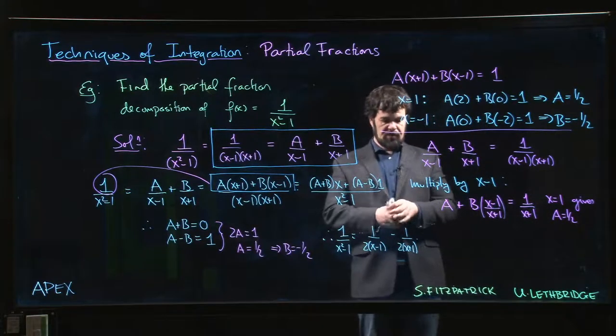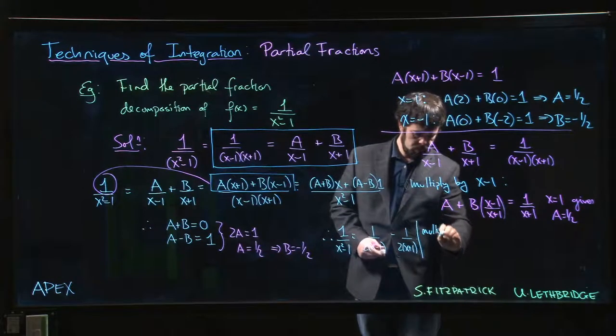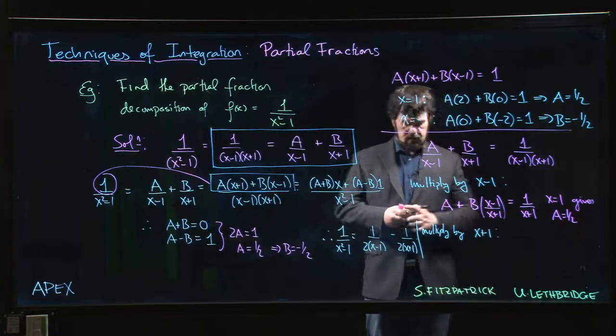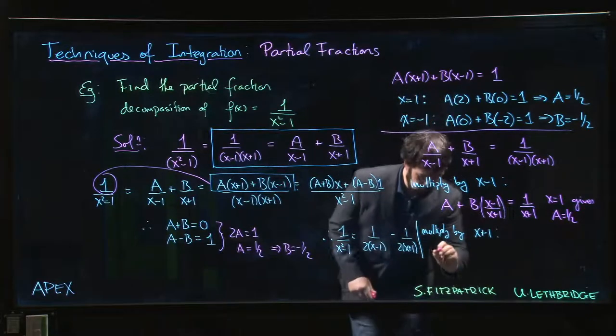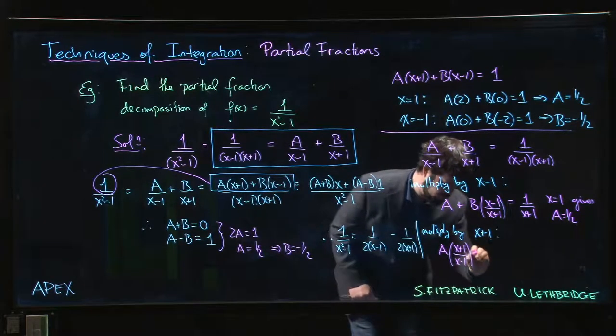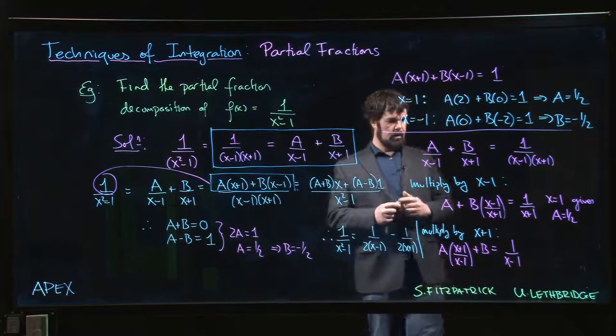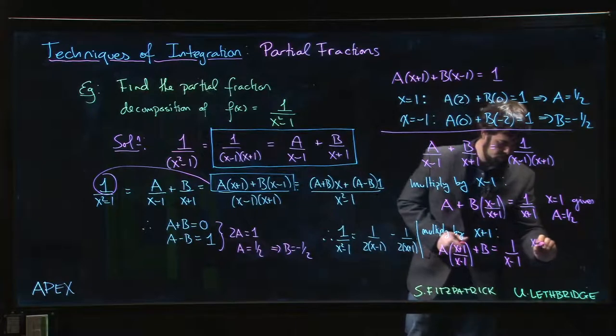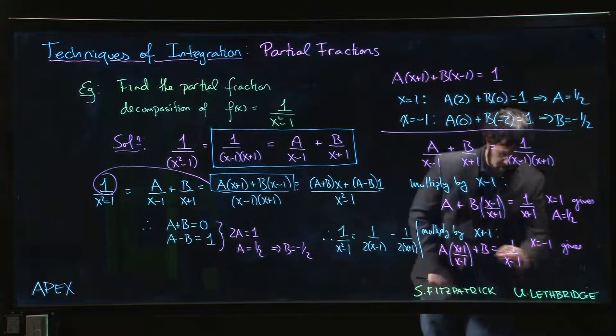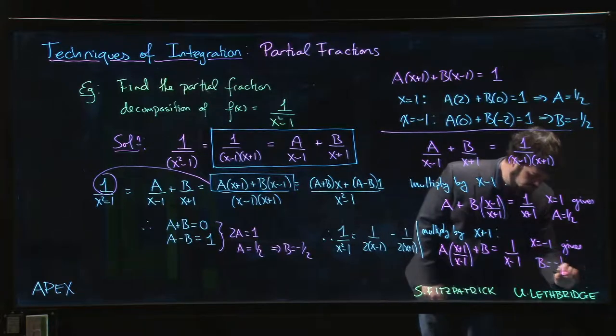And then you could similarly choose to multiply by x+1. If we do that, we get A times (x+1)/(x-1) plus B equals 1/(x-1). If we put x equal to -1, well then that's 0, that's just B, and that's 1 over -2, so B equals -1/2.